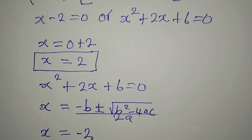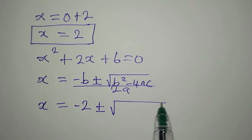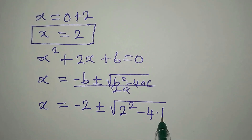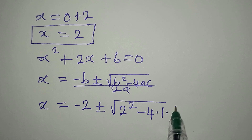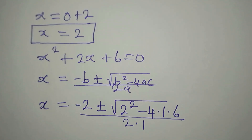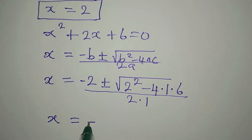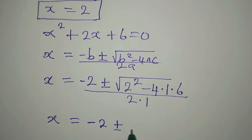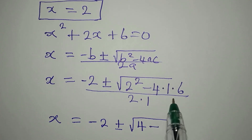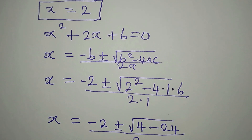Substituting, x equals minus 2 plus or minus square root of 2² minus 4 times 1 times 6, all divided by 2 times 1. This simplifies to minus 2 plus or minus square root of 4 minus 24, divided by 2.